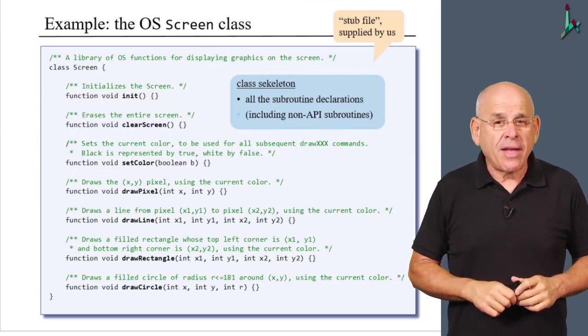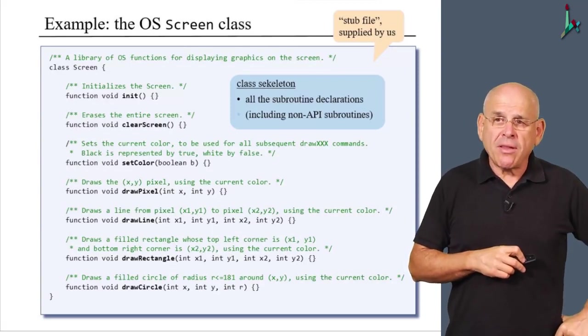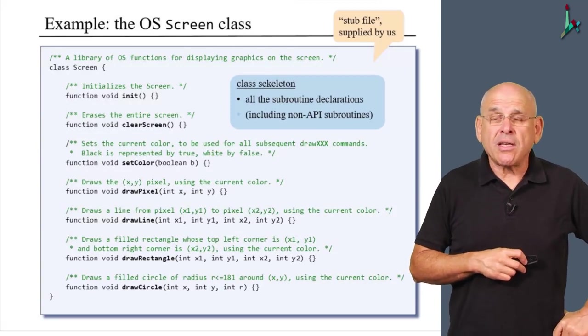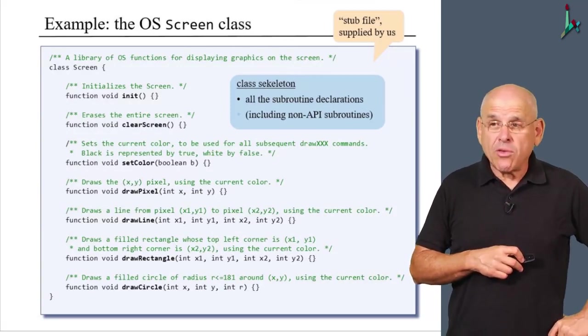And notice that these subroutines include also the non-public subroutines that application programmers don't get to see. In other words, this file was delivered to you by the system architect, who said, now go on and implement every subroutine that you see here, including, for example, init, which is a subroutine that the application programmers don't get to see.